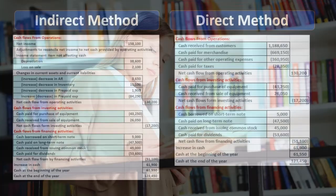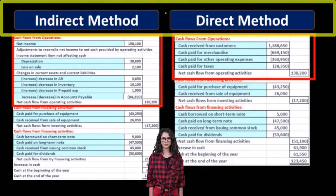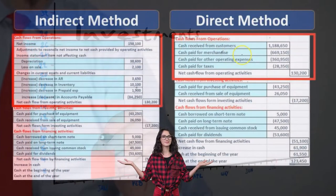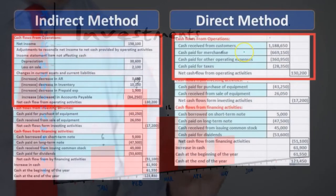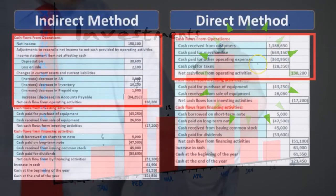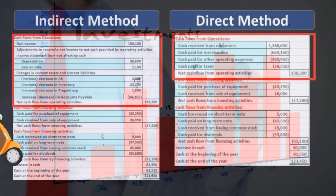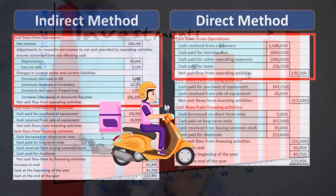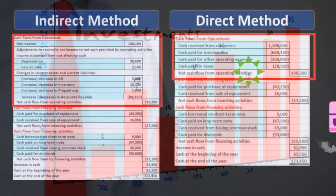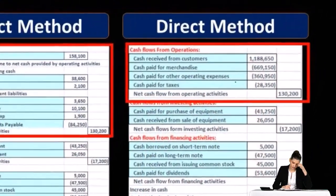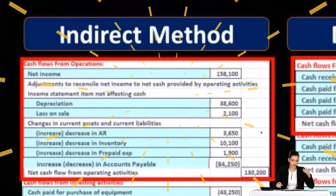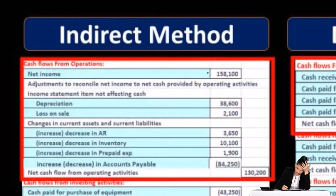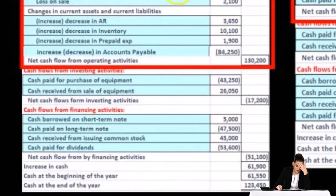You might think: why would we want the indirect method when the direct method seems more straightforward? If I were to explain to an investor how this works, it would be easier to look at the direct method — to say this is the cash flow from operations, similar to the income statement. We take cash received from customers, cash paid for merchandise, cash paid for other operating expenses, and cash paid for taxes, and you can see these line up in a similar fashion to the income statement.